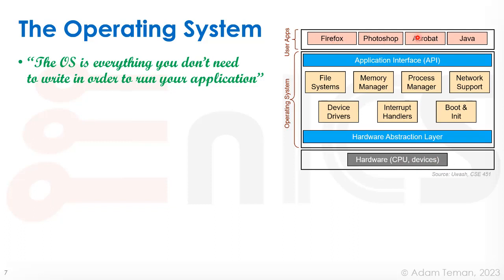At the top level we have our applications — Firefox, Photoshop, Acrobat, Java, different types of applications running at the top. And in the middle we have the operating system. It provides an abstraction layer to talk to the hardware, an API to talk to the software, and all these different types of services inside: file systems, memory managers, process managers, network support, device drivers, interrupt handlers, boot and init, and other things we'll be discussing today.